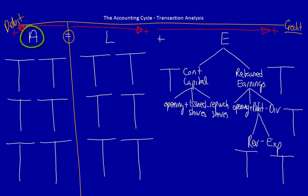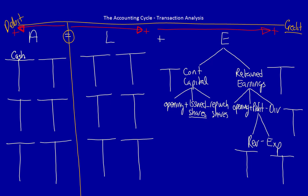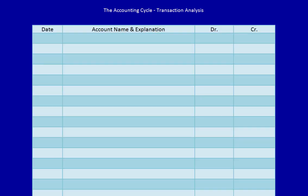Cash is an asset because it has future economic benefit — assets increase. What did the company give away? They gave away ownership in the company: equity in the form of issued shares, so equity increases. Step three: choose the account names — cash is what we received, contributed capital is the representation of what was given away. Step four: record the transaction into the T-accounts. Assets always increase on the left because assets are on the left-hand side of the equal sign: $71,100. Contributed capital increases on the right-hand side because equity is on the right-hand side of the equal sign. Step five: record it in the general journal — the date is unknown so we use the indicator. Always list debits first, then list the credits and indent them.